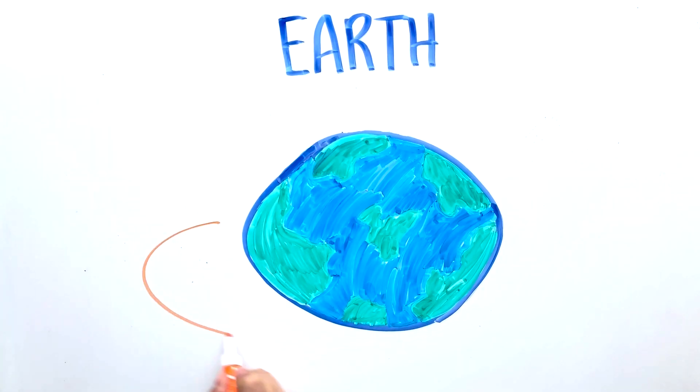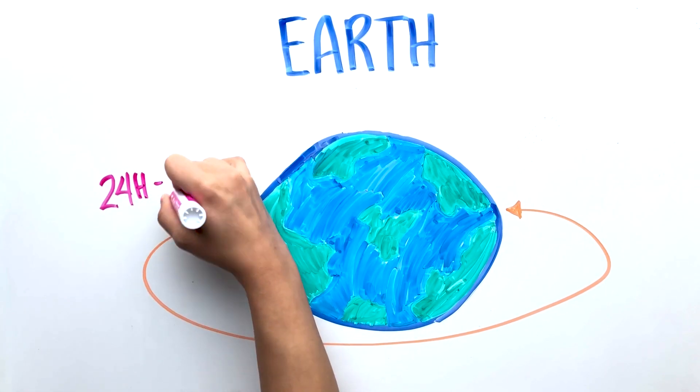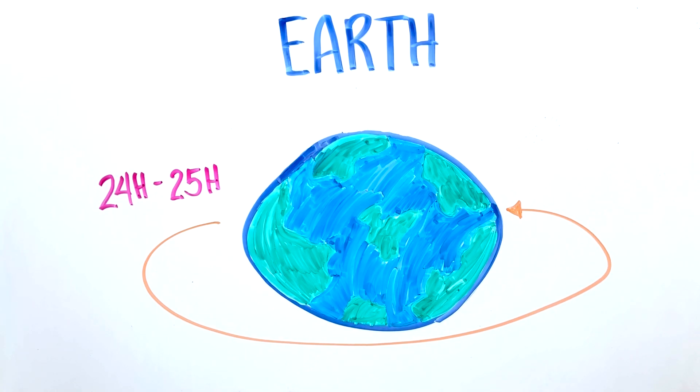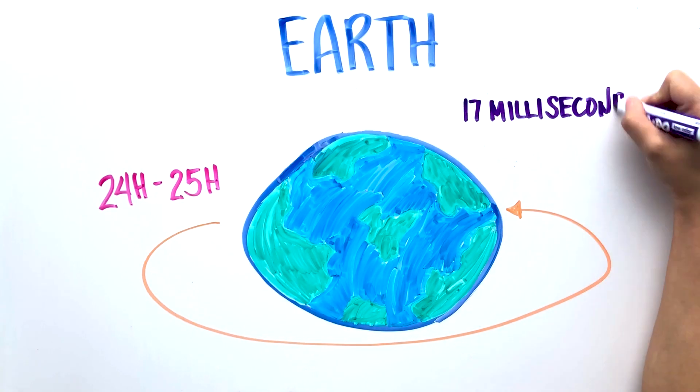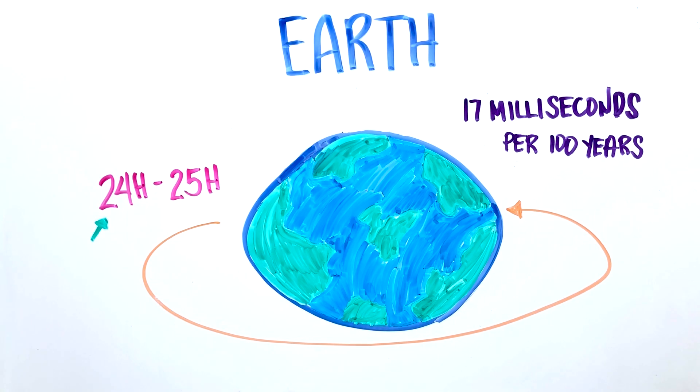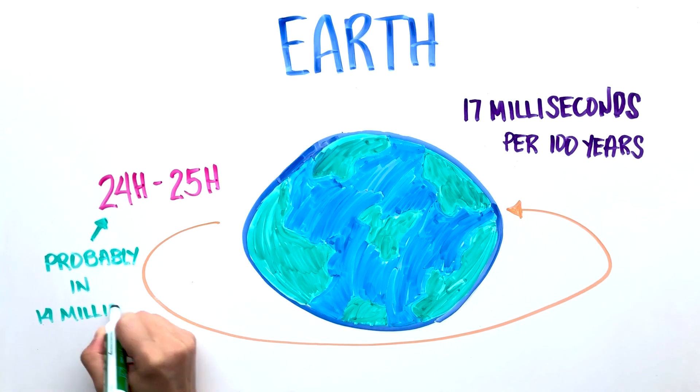The Earth's rotation is slowing down and the length of day could actually increase from 24 hours to 25 hours, but this happens so slowly, about 17 milliseconds per 100 years. And that could take as much as 14 million years for this to happen, so don't worry.